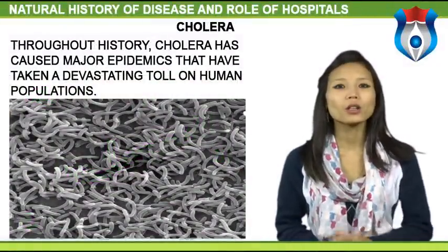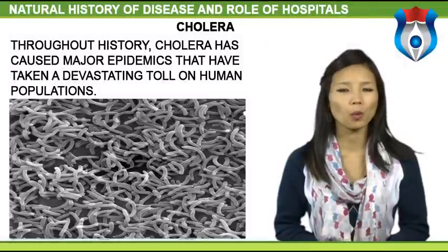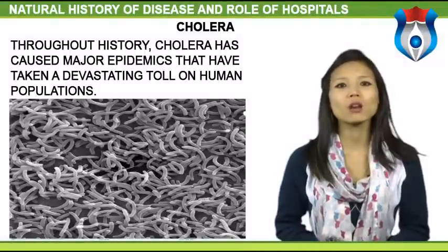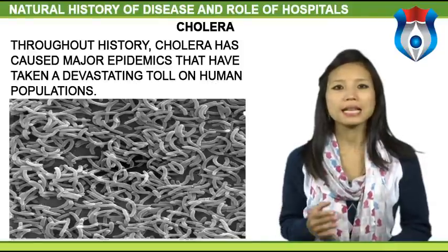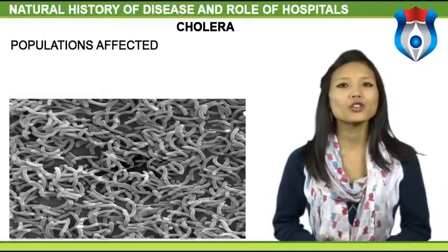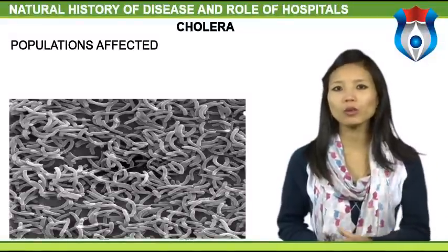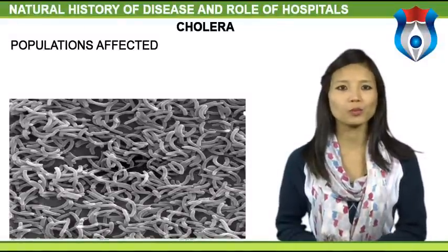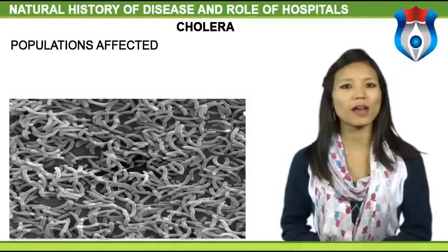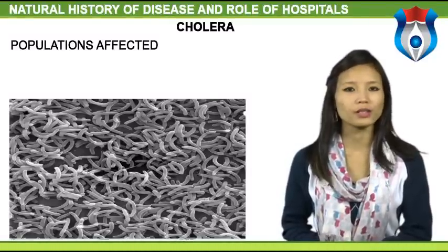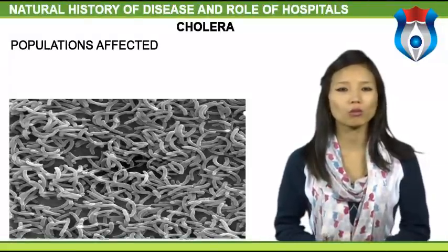Throughout history, cholera has caused major epidemics that have taken a devastating toll on human populations. It is most commonly connected to areas with poor sanitary conditions and dense populations. Cholera has been responsible for more than a million deaths across the globe. It is prevalent in areas of high population where there are poor water purification systems and where food storage and preparation is unhealthy. Poor hygiene is key for Vibrio cholerae to infect a host.